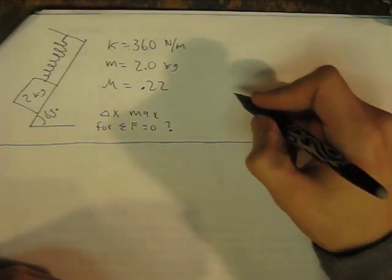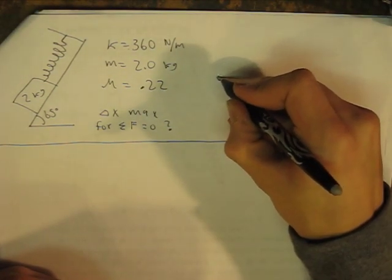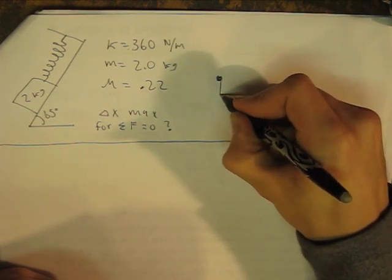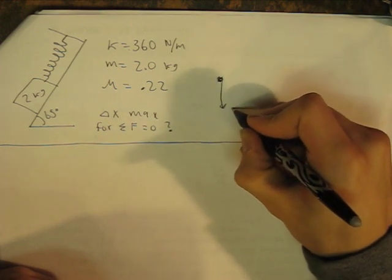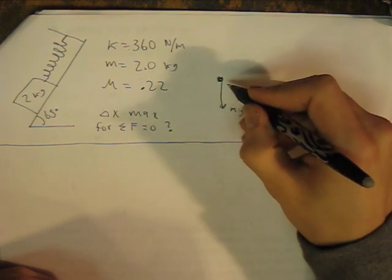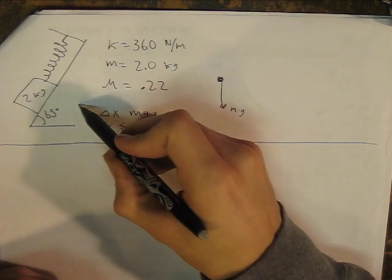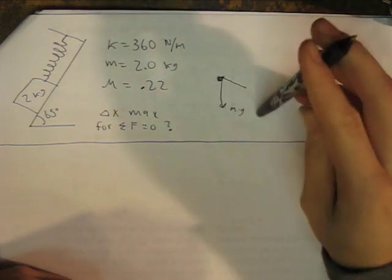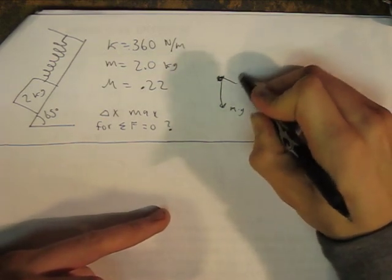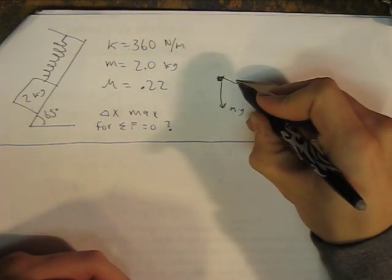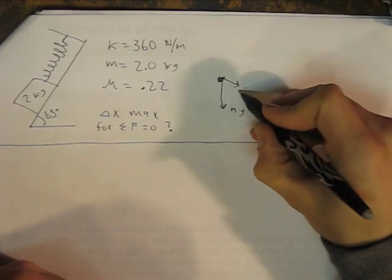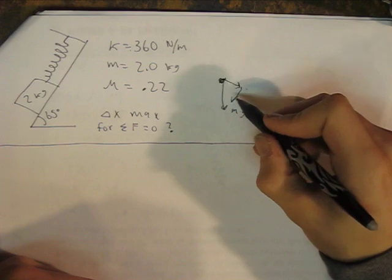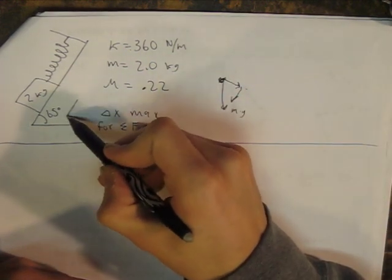So we want to, let's draw a free body diagram first. So let's say this is the 2 kg weight right here. Going straight down is always going to be mass times gravity. Going perpendicular to the surface is going to be the normal force. Let me draw that at a good size. This is going to be the normal force right here. And of course right here is just the combined force, the one that's parallel, so going like this.